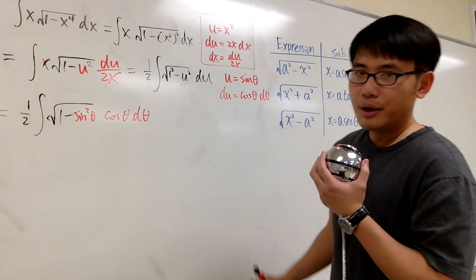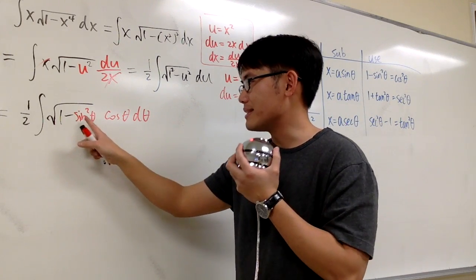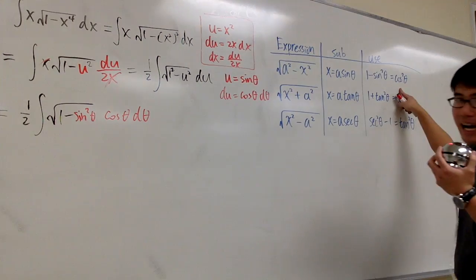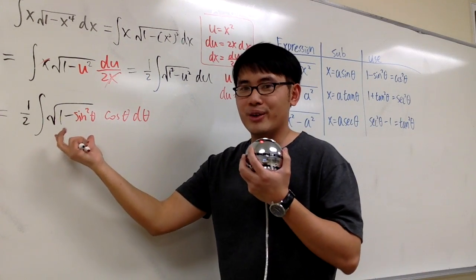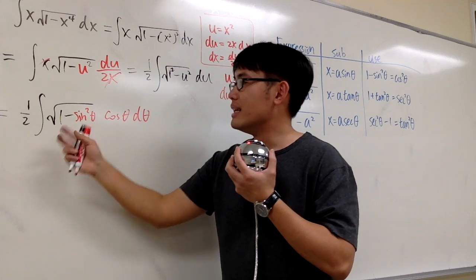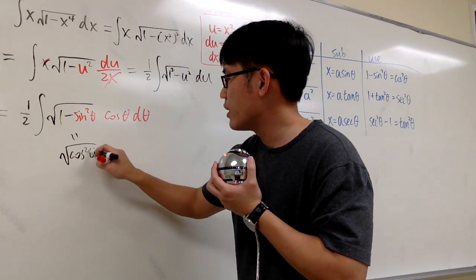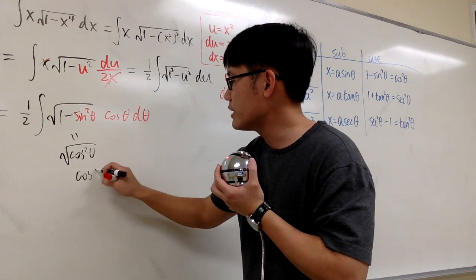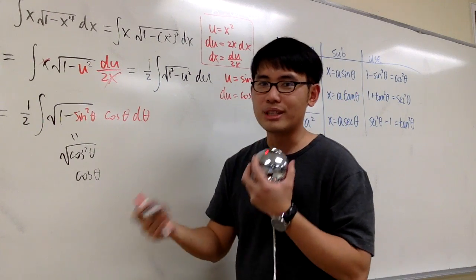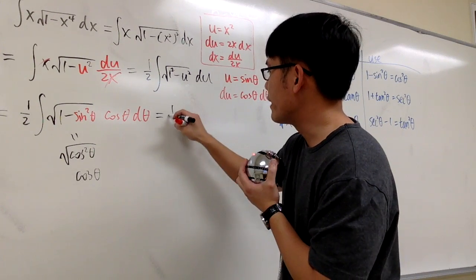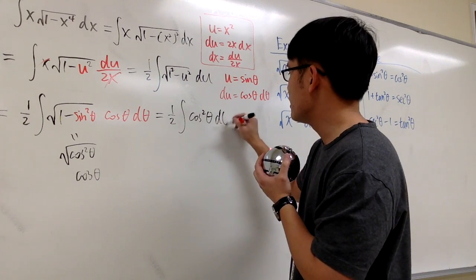Now, 1 minus sine squared equals cosine squared — we can use that. So square root of cosine squared is just cosine, and together with the other cosine factor we have cosine to the second power. This gives us 1 half times the integral of cosine squared theta d theta.